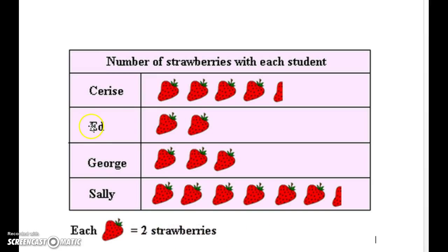If we look at Ed, he's got two strawberries, so that's two, four - Ed ate four strawberries. George has got three strawberries, that's two, four, six - George ate six strawberries. If you see here, Sally's got half a strawberry.